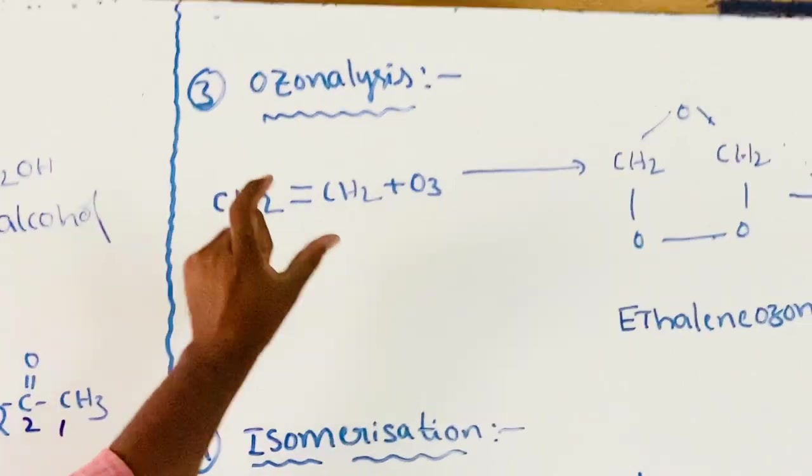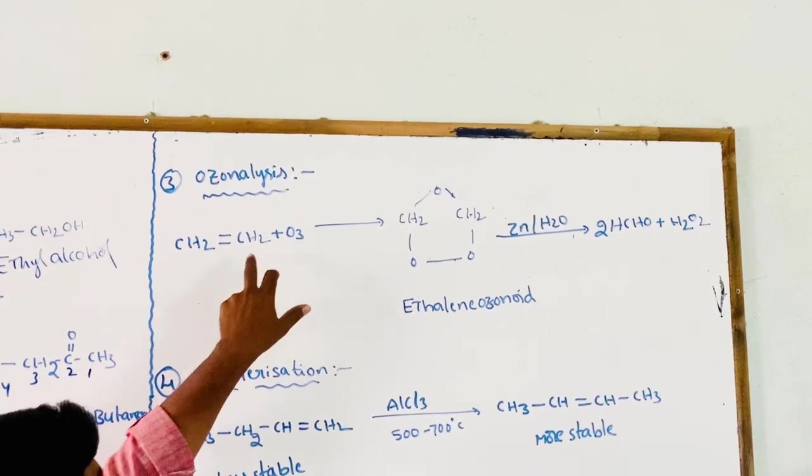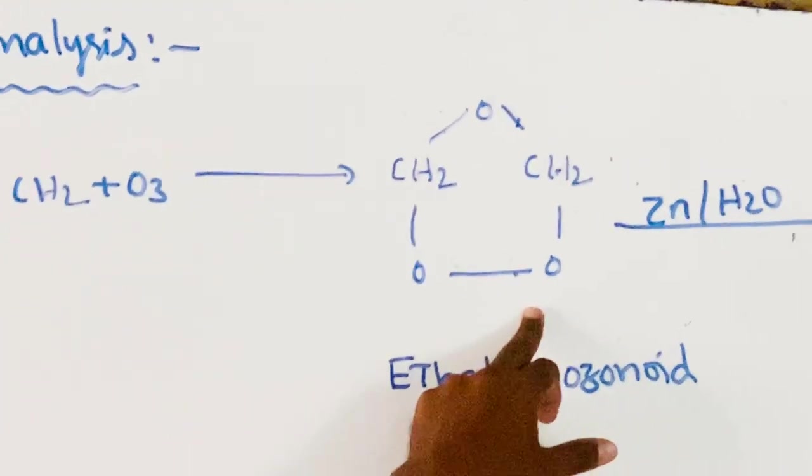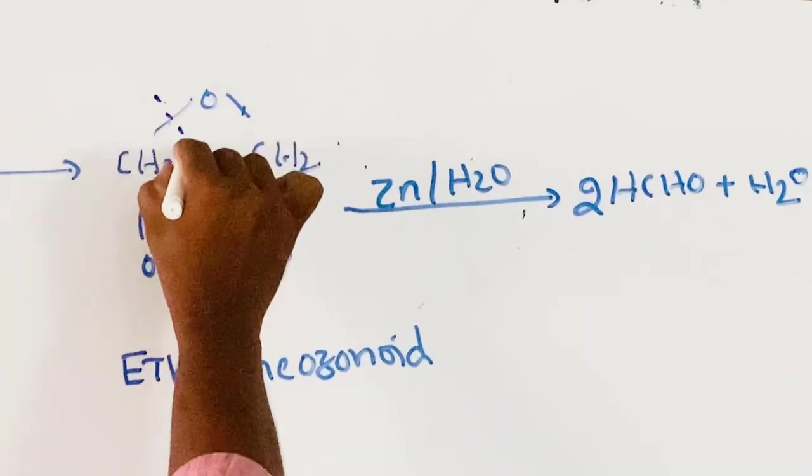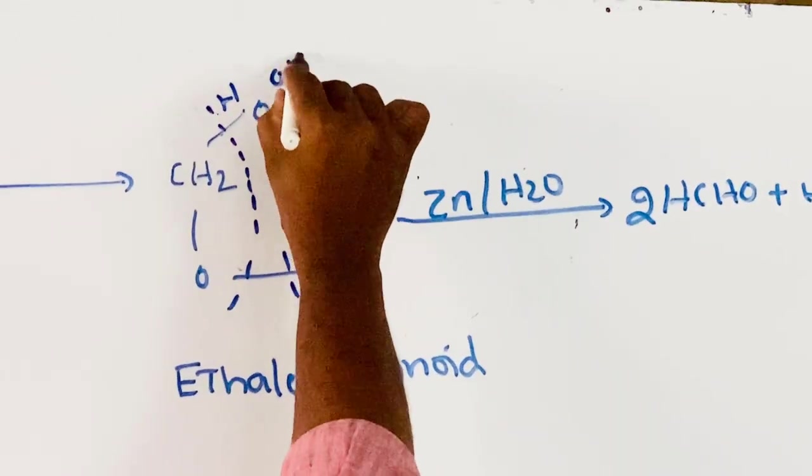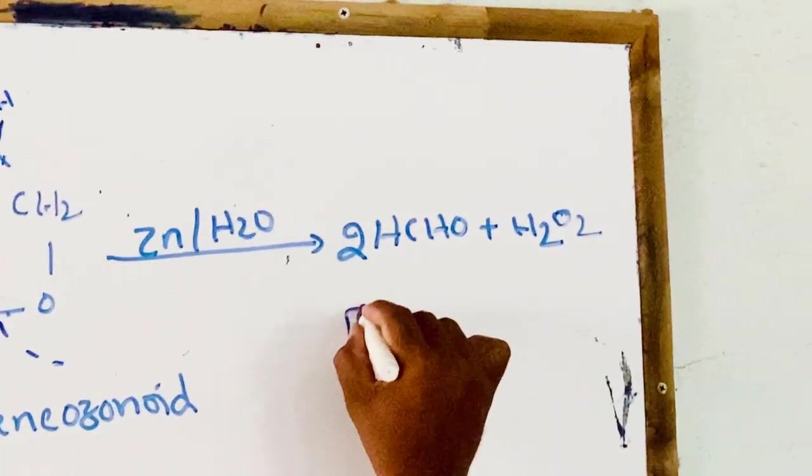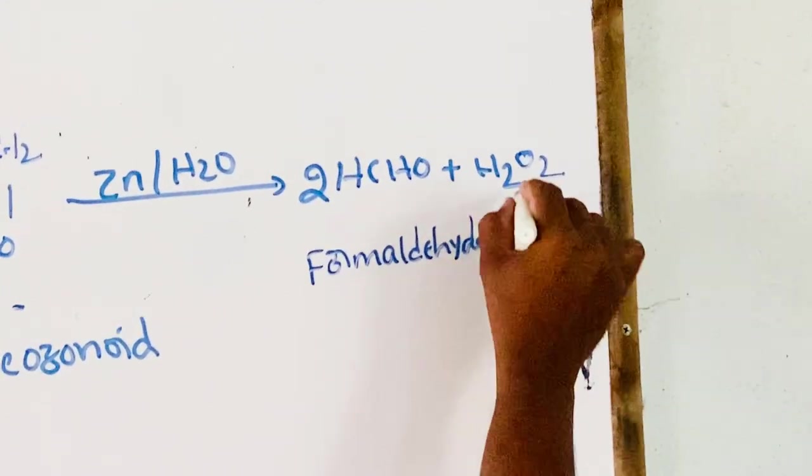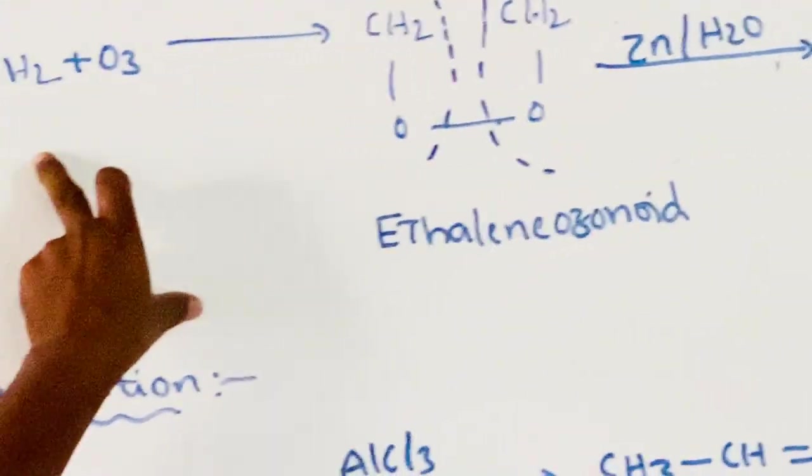Next, ozonolysis. Ozonolysis means addition of ozone. Alkenes react with ozone, that is ethene reacts with ozone to give ethylene ozonide. These ethylene ozonides undergo hydrolysis in the presence of zinc metal to give aldehydes: two moles of formaldehyde (HCHO, HCHO) and hydrogen peroxide (H2O2). These are ozonides of alkenes.